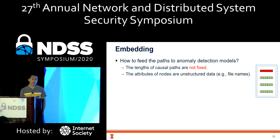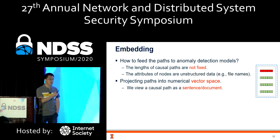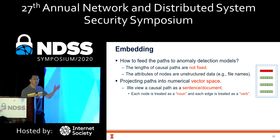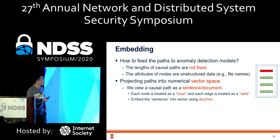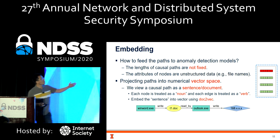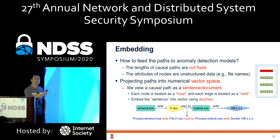After path selection, the next stage is embedding — fitting the paths into an anomaly detection model. Because the lengths of these paths are not fixed and the attributes of nodes are often unstructured data such as file names, we propose to project them into vector space. We view a causal path as a sentence: each node is treated as a noun, and each edge as a verb, making the path like a sentence. We can then use a sentence or document embedding approach, for example doc2vec, to embed the path into embedding space, where similar paths will be closer together and different paths will be far apart.